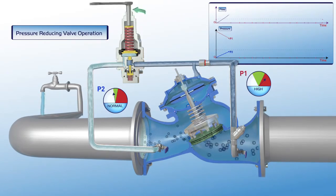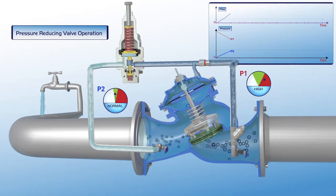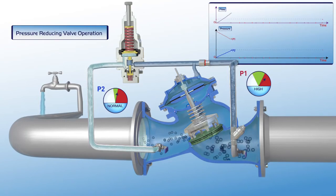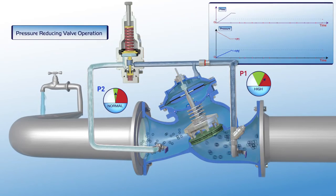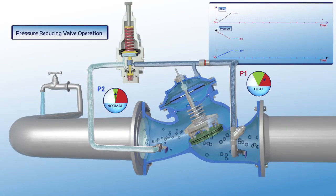The downstream pressure stabilizes at the P2 gauge green zone. As shown on the chart, flow through the valve at this stage is constant, and the P1 upstream pressure is reduced to the required green zone settings of the P2 downstream pressure gauge.